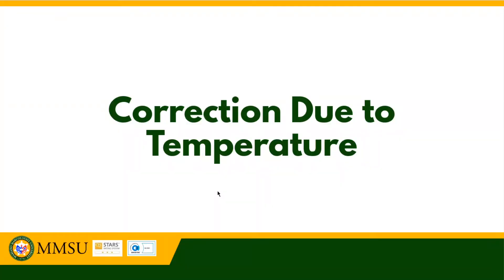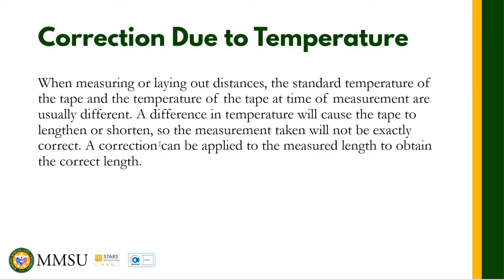Today we are going to talk about correction due to temperature. When measuring or laying out distances, the standard temperature of the tape and the temperature at the time of measurement are usually different. A difference in temperature will cause the tape to lengthen or shorten, so the measurement taken will not be exactly correct. A correction can be applied to the measured length to obtain the correct length. The principle behind correction due to temperature is the contraction or elongation of the tape based on temperature.